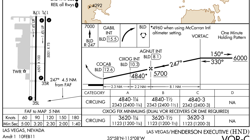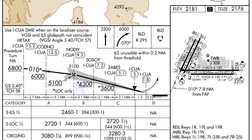Next, on the profile view, you'll see a Maltese cross. The Maltese cross depicts the final approach fix for that specific approach, if it has one. Approaches without a final approach fix will not include a Maltese cross. The Maltese cross is also on ILS approaches to depict the final approach fix of the localizer-only portion of the approach.